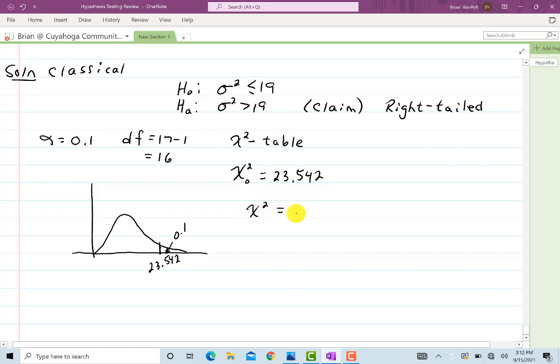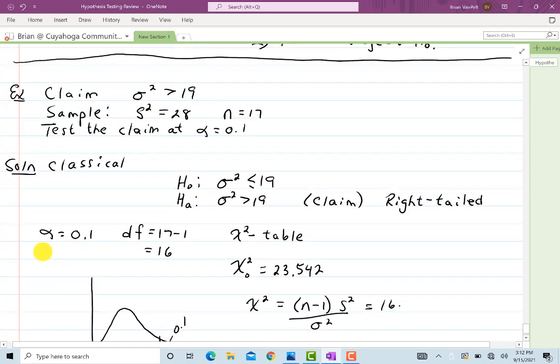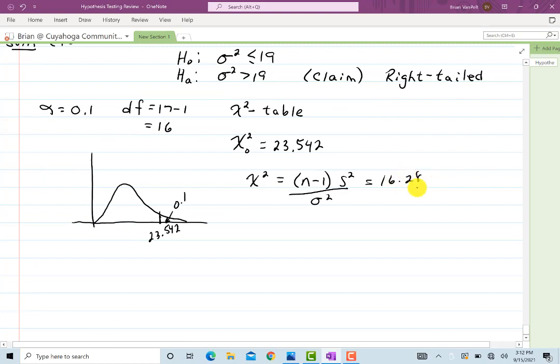And you saw the alpha was equal to 0.1. So here's what we have. That was 0.1. And this cutoff region was 23.542. Now let's calculate our chi-squared statistic. We will get n minus 1 s squared over sigma squared. And so n minus 1 is 16. s squared, that was 28 for s squared. And sigma squared, 19. This is approximately equal to 23.579. And it is inside of there. It's a little bit bigger than that 23.542. So we reject h sub 0.